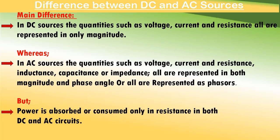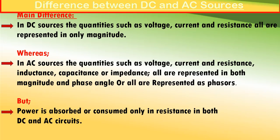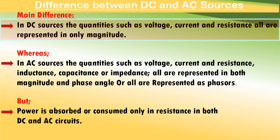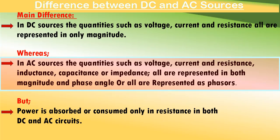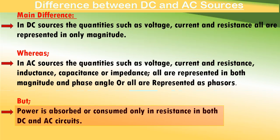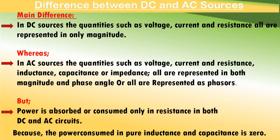Before we discuss AC sources, let us see the main difference between DC and AC sources. In DC sources, quantities such as voltage, current, and resistance are represented only in magnitude. Whereas in AC sources, all quantities such as voltage, current, resistance, inductance, capacitance, or impedance are represented both in magnitude and phase angle. But remember, power is absorbed only in resistance in both DC and AC circuits, because power consumed in pure inductance and pure capacitance is zero.